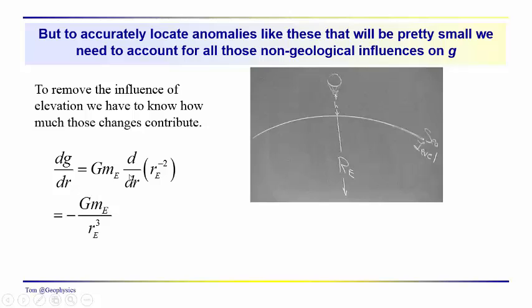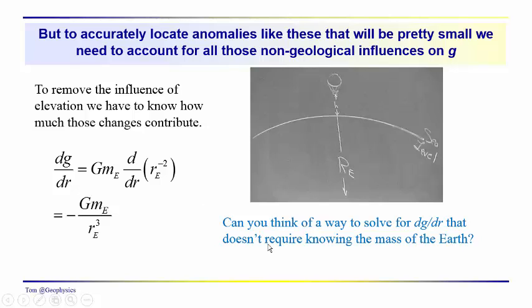And we found that that is equal to minus g times the mass of the earth over r_e, the radius of the earth squared. So one of the things to think about would be can you solve this expression over here, dg/dr, so that it doesn't require knowing the mass of the earth. What if we didn't know what m_e was? Could we figure out what dg/dr is?